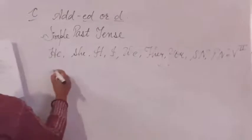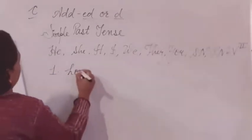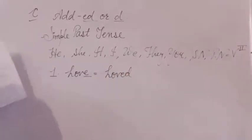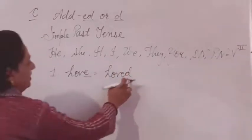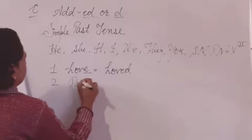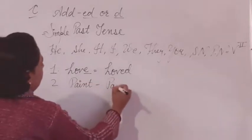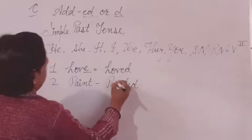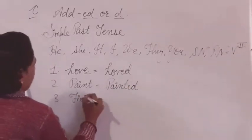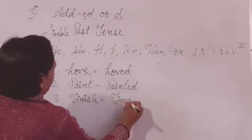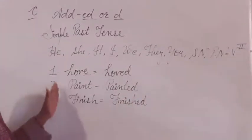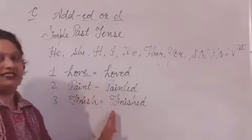For example: the word love — since E is already given, we add only D, making it loved. Second is paint — adding ED makes it painted. Third is finish — adding ED makes it finished. Like this, we will convert all main verbs into past tense verbs.